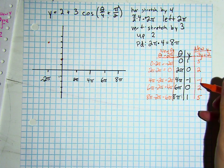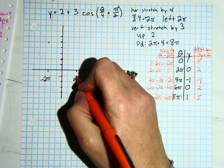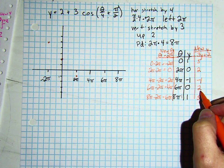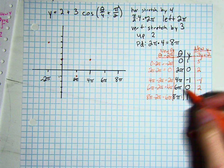At 2 pi, I'm at negative 1. At 4 pi, I'm at 2. At 6 pi, I am at 5.